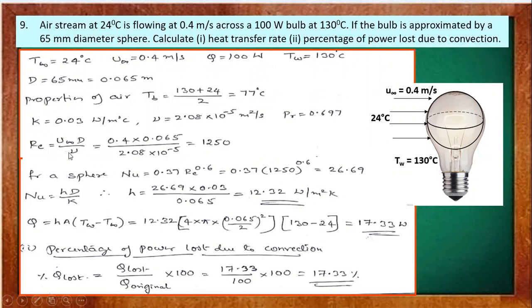Reynolds number = U∞ × D / μ. For the sphere, we take the diameter as the characteristic dimension. So U∞ = 0.4 m/s, D = 0.065 m, divided by μ. We are not checking laminar or turbulent here; we directly use the Nusselt number expression for a sphere: Nu = 0.37 × Re^0.6.